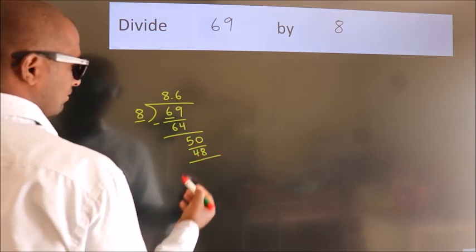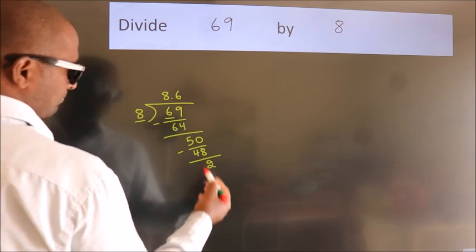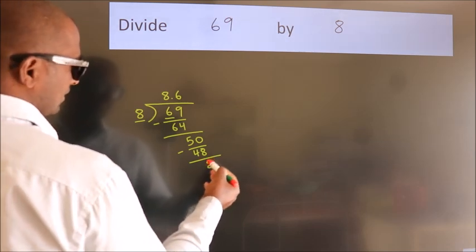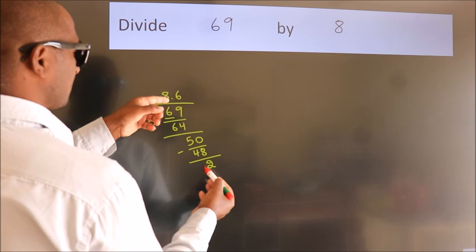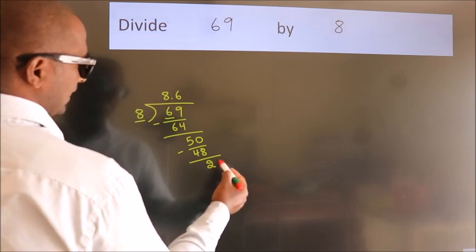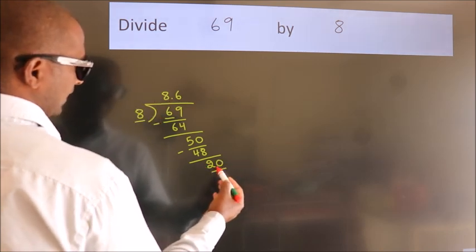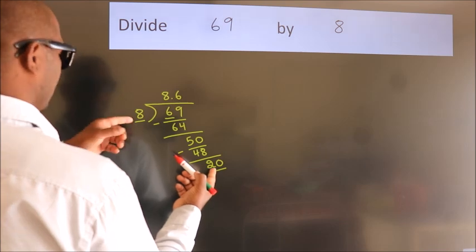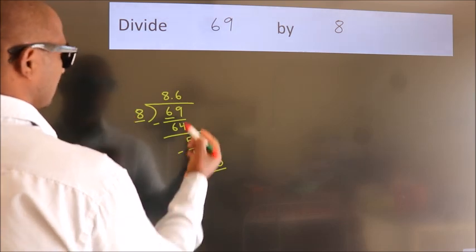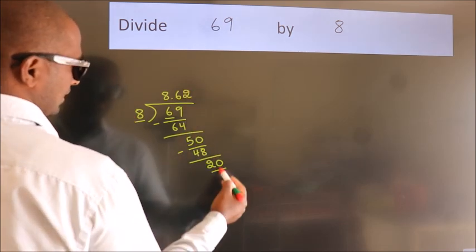Now we subtract. We get 2. After this, we already have the decimal, so directly take 0, so 20. A number close to 20 in the 8 table is 8 times 2, 16.